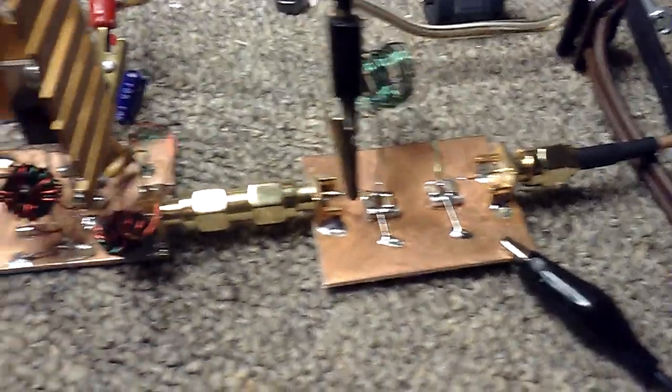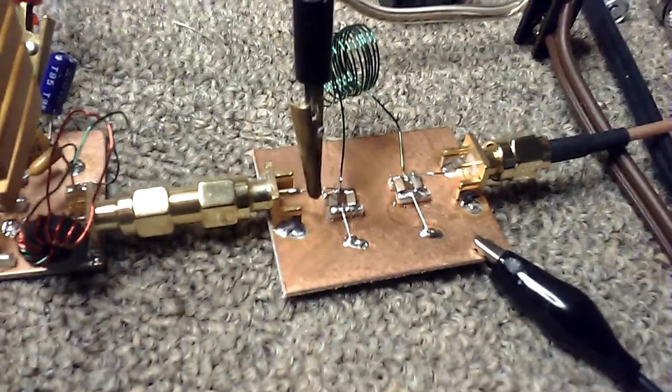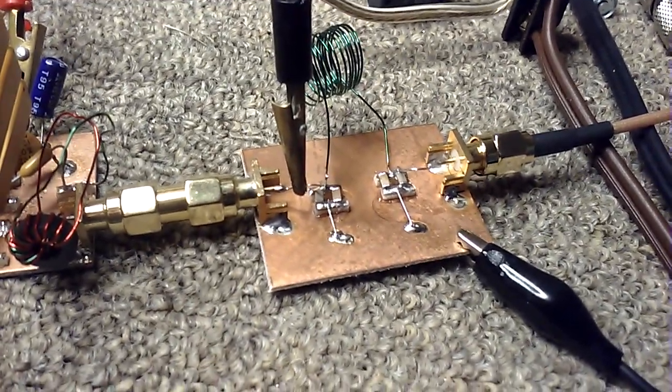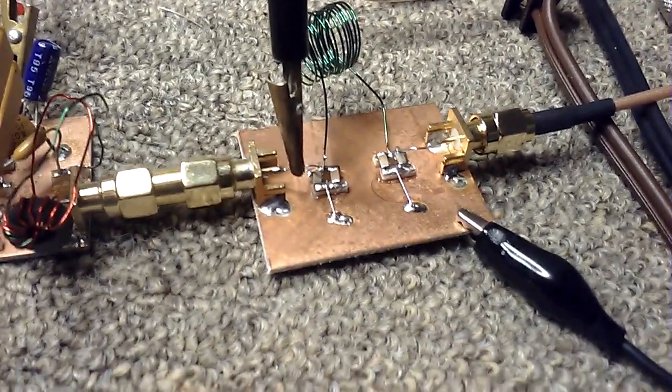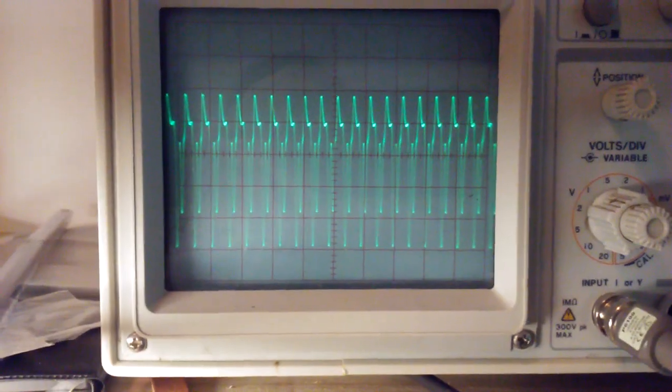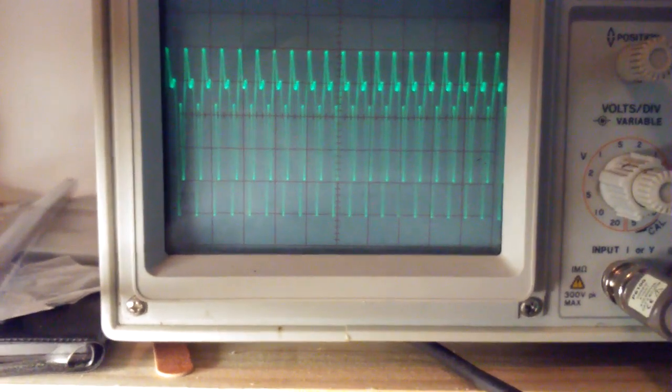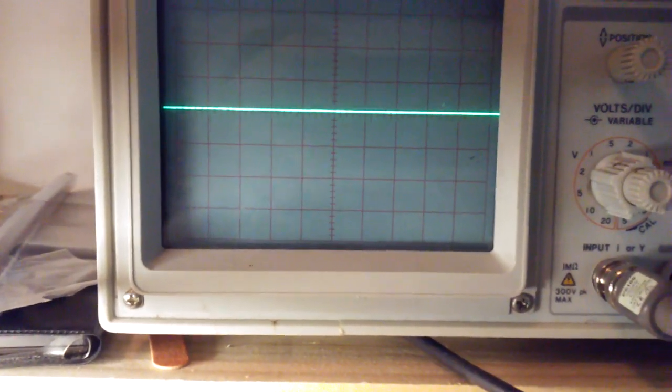I've got the oscilloscope connected to the signal coming out of the MOSFET PA, and this is what that looks like. As you can see, it's quite spiky, which I've heard is typical for these MOSFET devices.